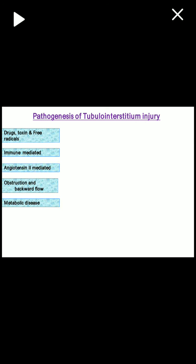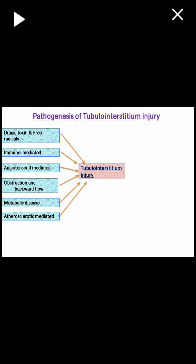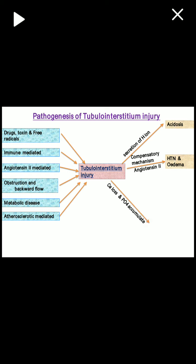The pathogenesis of tubular interstitial injury involves drugs, toxins, and free radicals affecting the tubules and interstitium. It can be immune-mediated, due to obstruction and backward flow, metabolic diseases, angiotensin-mediated, or atherosclerotic. Tubular interstitial injury leads to increased secretion of hydrogen ions causing acidosis, compensatory angiotensin activation leading to hypertension and edema, calcium loss and potassium accumulation causing renal osteodystrophy, and fibrosis leading to renal damage.